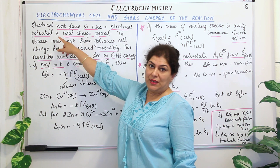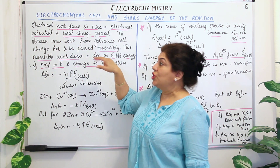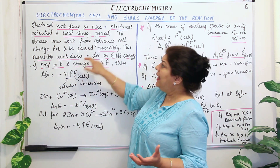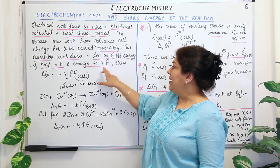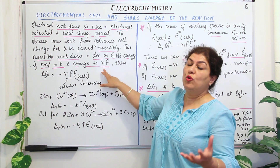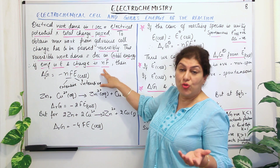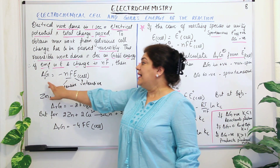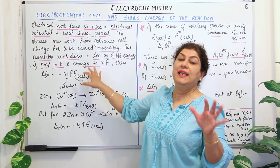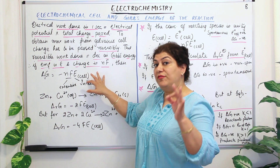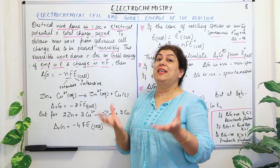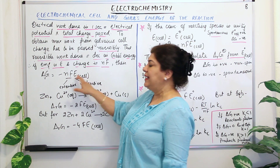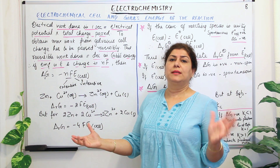The electric potential is the potential difference, that is E cell. The charge is equal to nF, where n is the number of moles of electrons being transferred and F is Faraday's constant. So delta RG is equal to minus nFE. This is not at equilibrium — it applies when the reaction is going on. This is the maximum amount of work that can be done.